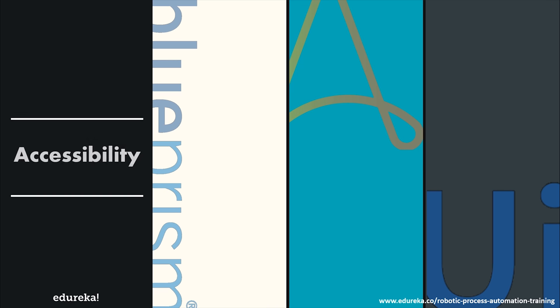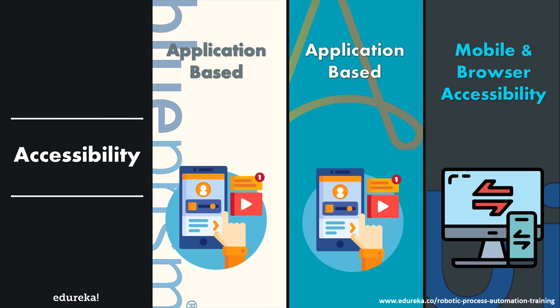Comparing these tools based on accessibility: Blue Prism and Automation Anywhere are similar — both can be accessed through apps. UI Path, on the other hand, offers mobile and browser accessibility. Which tool to use depends entirely on your scenario and which best caters to your needs.